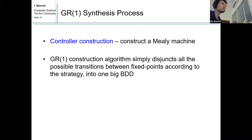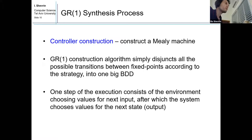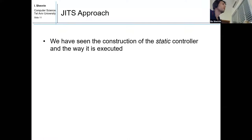The GR1 construction algorithm is actually very simple. It disjuncts all the possible transitions between the fixed points according to the strategy into one big BDD. During execution, one step consists of the environment choosing values for the next input, after which the system, according to the strategy, chooses values for the next output according to this one big BDD of all the transitions. We call it static because it is computed before the execution.